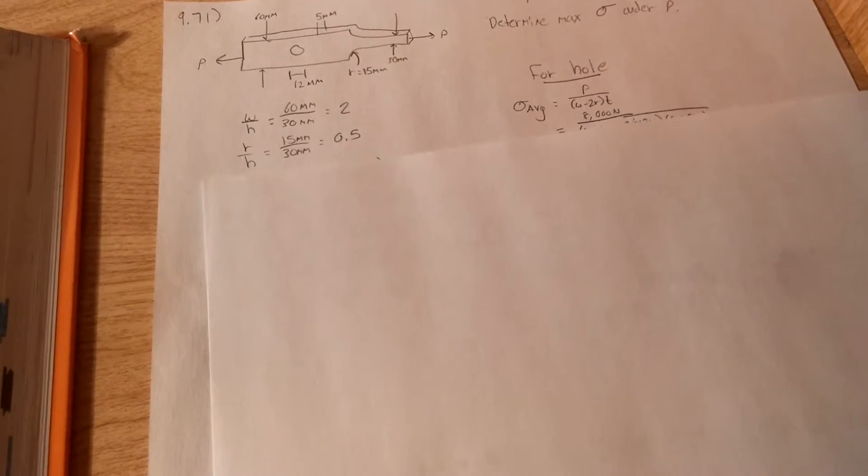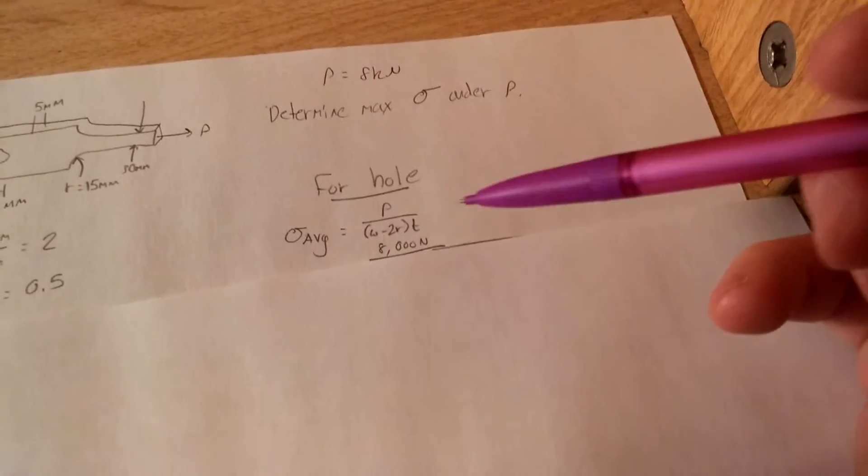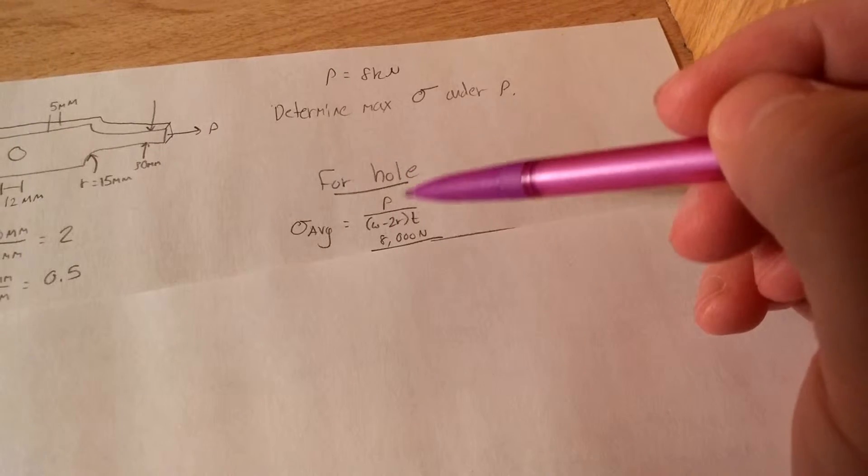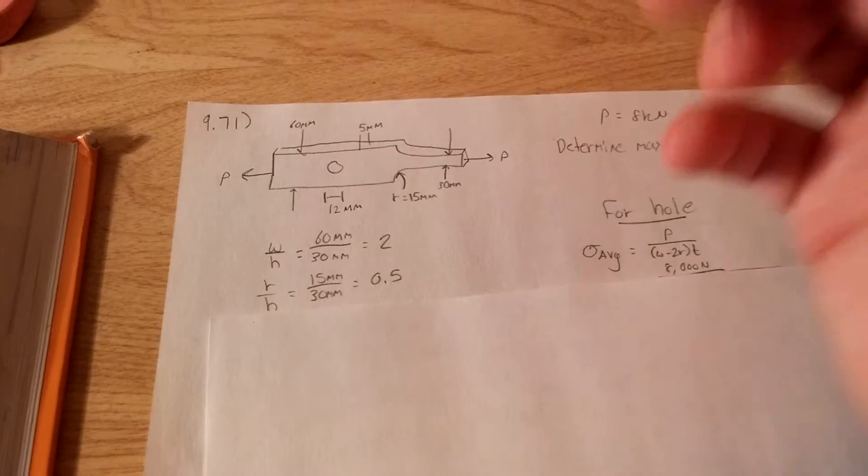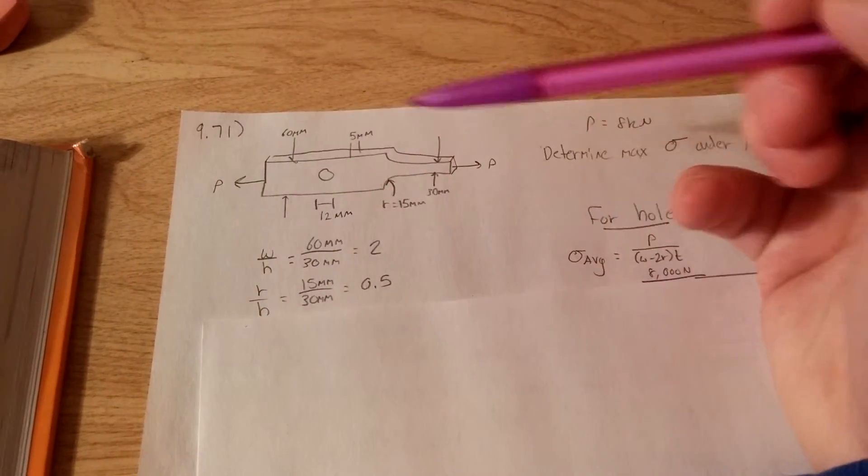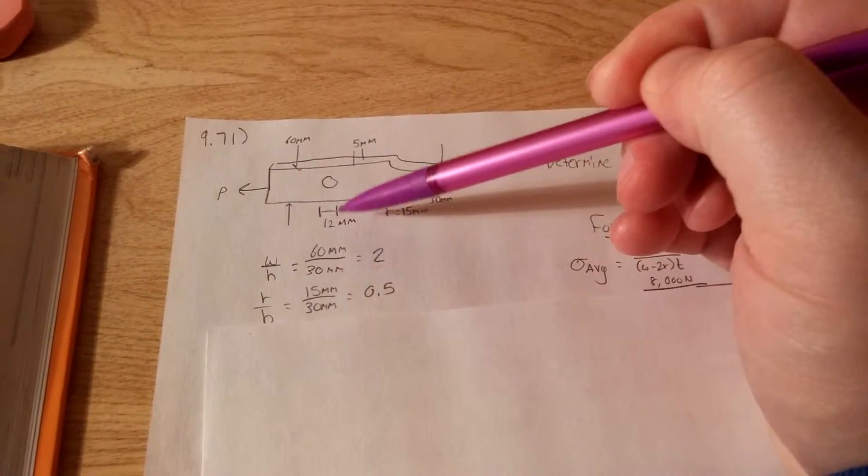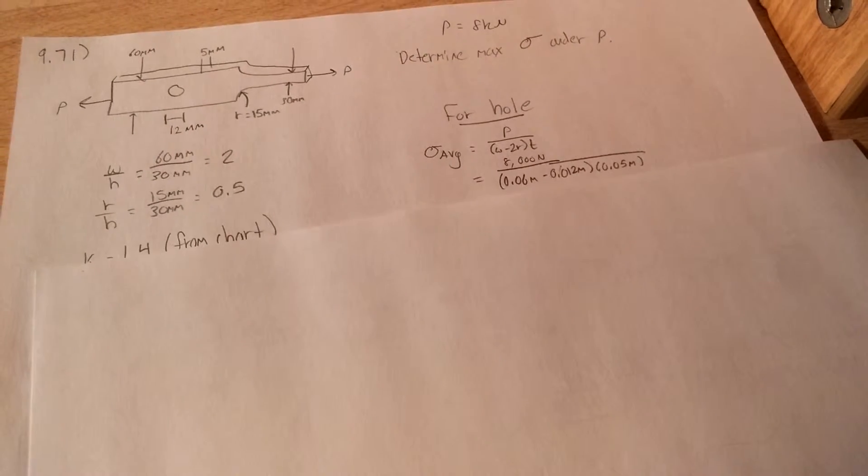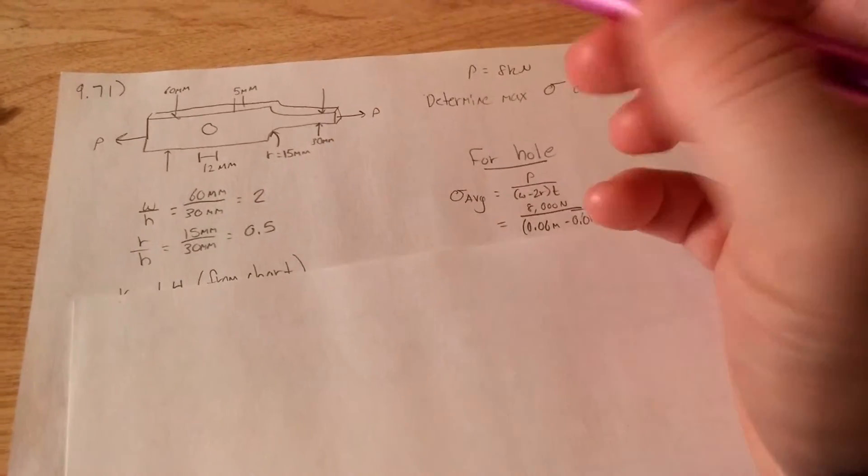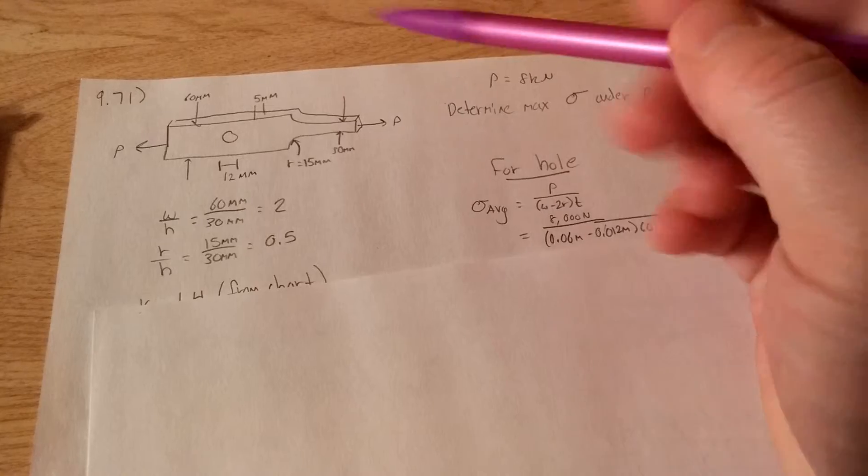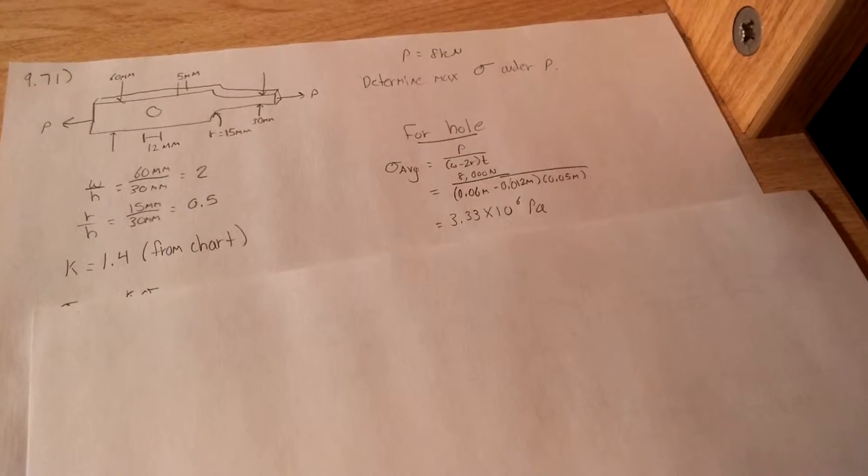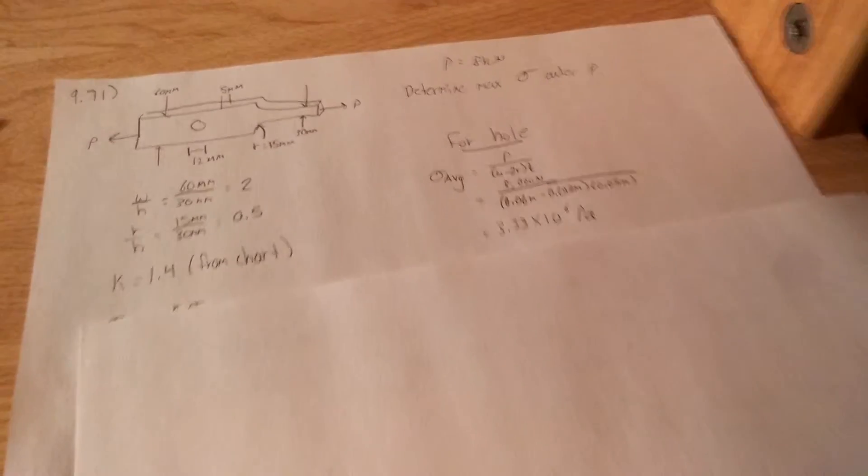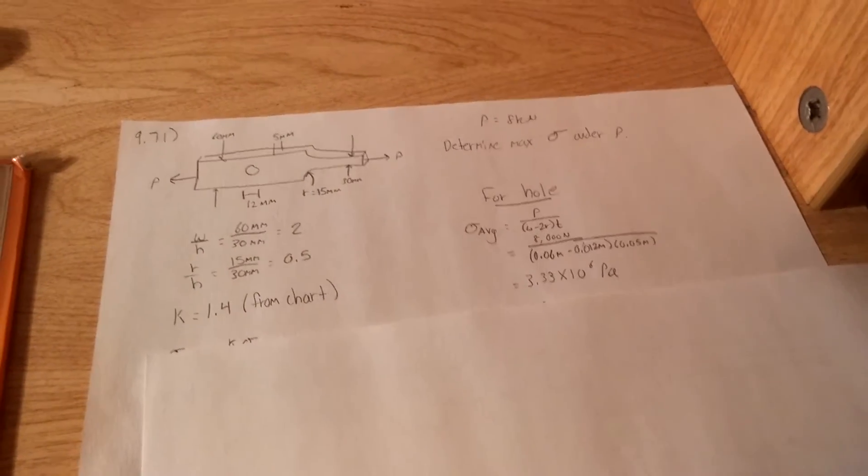Now we have to worry about the hole. So when we do the hole, your theta average is equal to your P over W minus 2R times T. So W minus 2R is actually 12 times T, which is, this is T right here, your 5. So substitute all that in. You end up getting 3.3 times 10 to the 6th pascals. So that's our stress average.